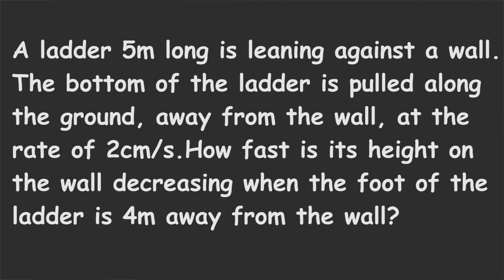A ladder 5 metres long is leaning against a wall. The bottom of the ladder is pulled along the ground away from the wall at the rate of 2 cm per second. How fast is its height on the wall decreasing when the foot of the ladder is 4 metres away from the wall?